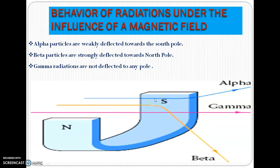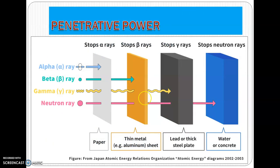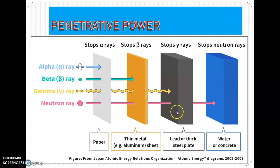Let's look at the penetrative power of these radiations. Alpha radiations are blocked by paper. Beta rays are stopped by a thin aluminium metal. Gamma rays are stopped by lead. And a neutron ray is stopped by water or concrete.